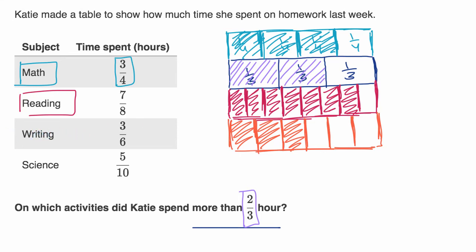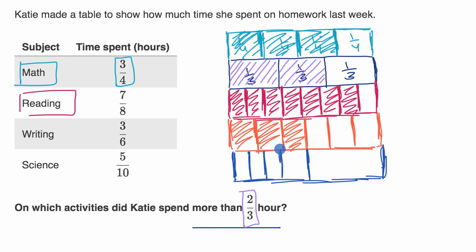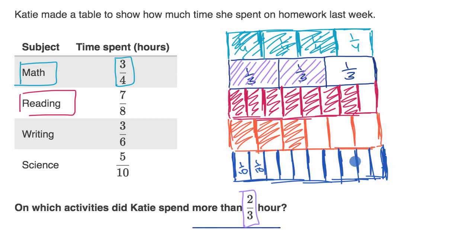She didn't spend more than two-thirds of an hour on writing. Last but not least, science — five-tenths. I'll make a whole and divide it into ten equal sections. Each of these is a tenth. Five of those tenths — one, two, three, four, five. Notice that five-tenths is the exact same thing as three-sixths, and like three-sixths, it is less than two-thirds.